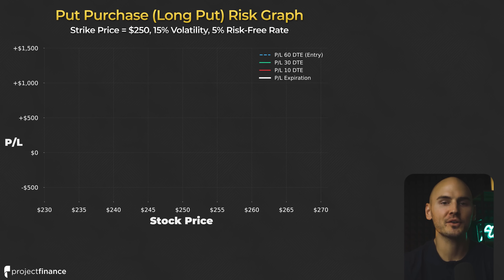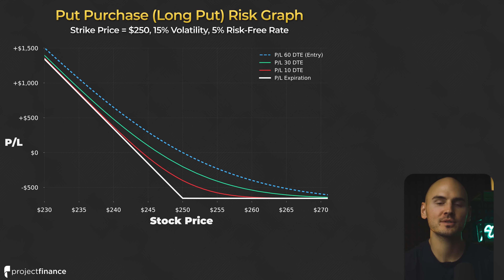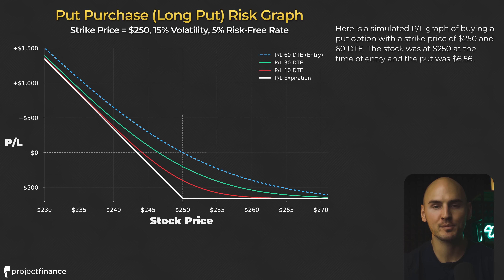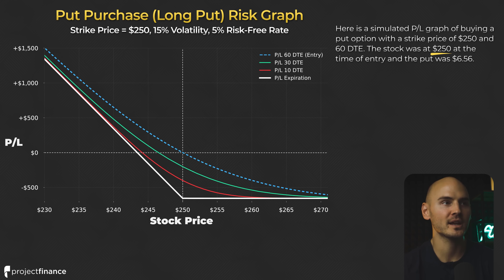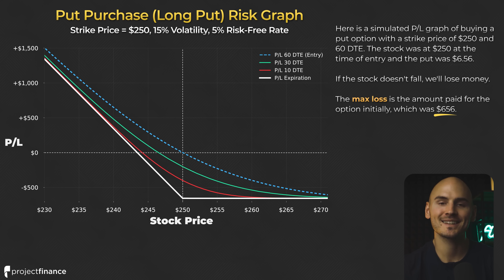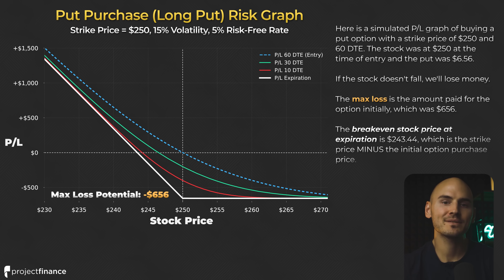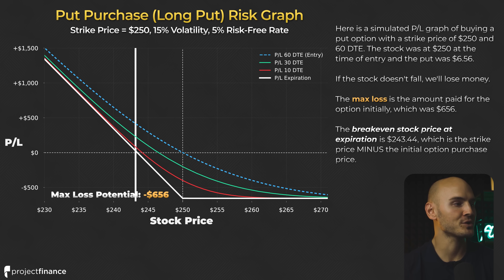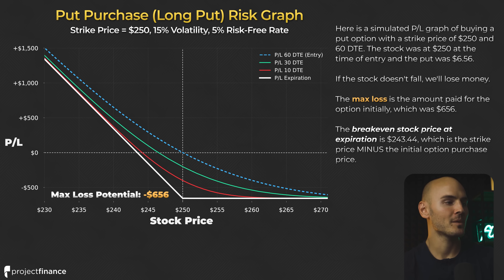The risk profile graph of buying a put option shows the money we can make and lose as the stock price changes. In this specific put option example, we're looking at a put with a strike price of $250 and 60 days to expiration. The stock price was at $250 at the time of entry, and the simulated put entry price was $6.56, meaning we would pay $656 for this option — which is also our maximum loss potential. This happens if the stock price increases. The breakeven stock price at expiration is $243.44, which is the strike price of $250 minus the entry price of $6.56. We need the stock price to decrease before the option expires in order to break even on the trade at expiration.